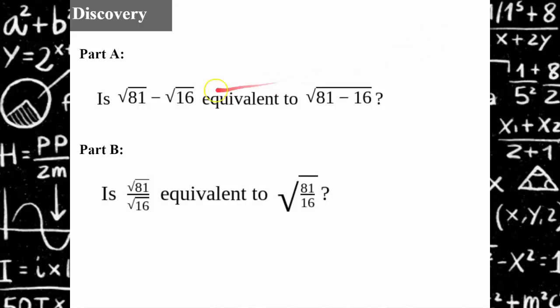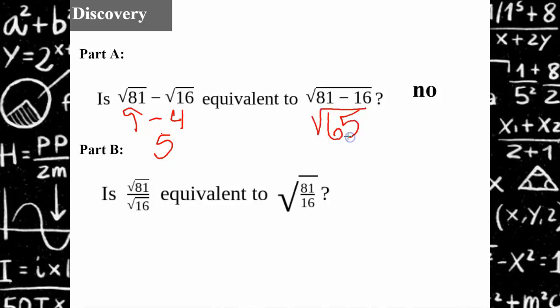Welcome back. So in part A, it's asking: is the square root of 81 subtract the square root of 16 equivalent to the square root of 81 minus 16? The answer would be no. The square root of 81 is 9. Subtract 4 would give you a value of 5. If we do 81 subtract 16, we get the square root of 65, which is not equivalent to 5. So the answer is no.